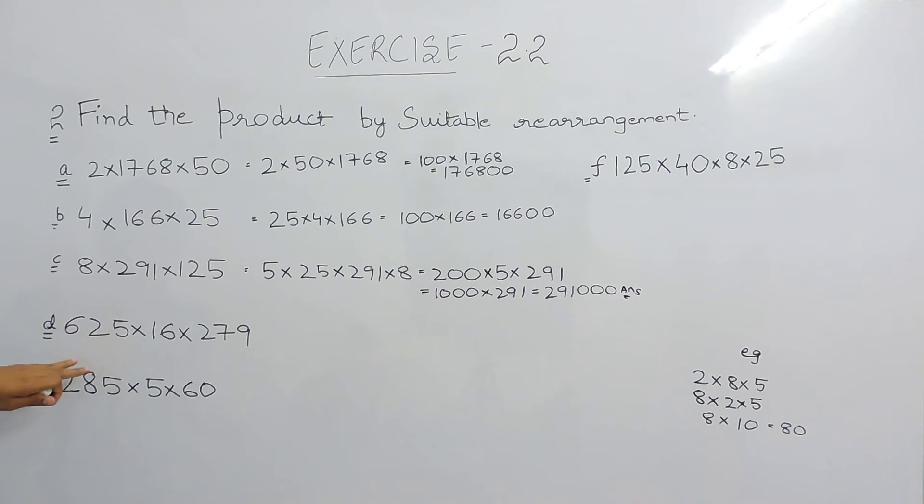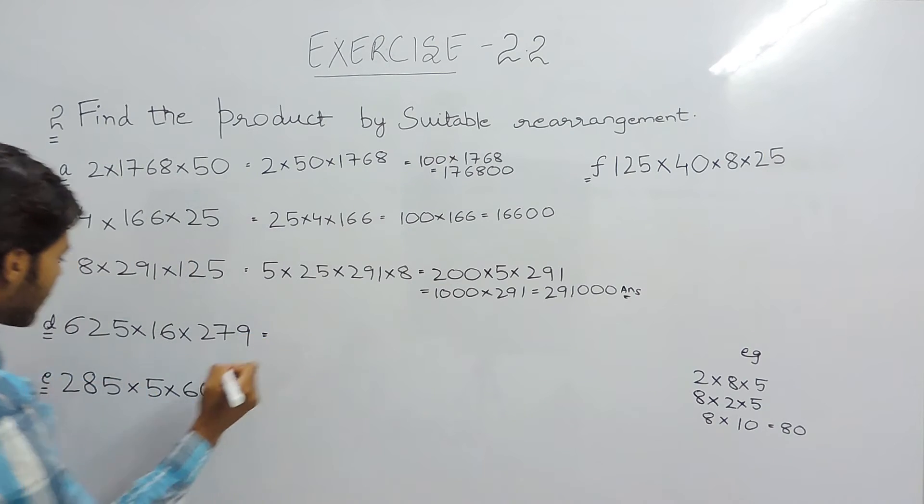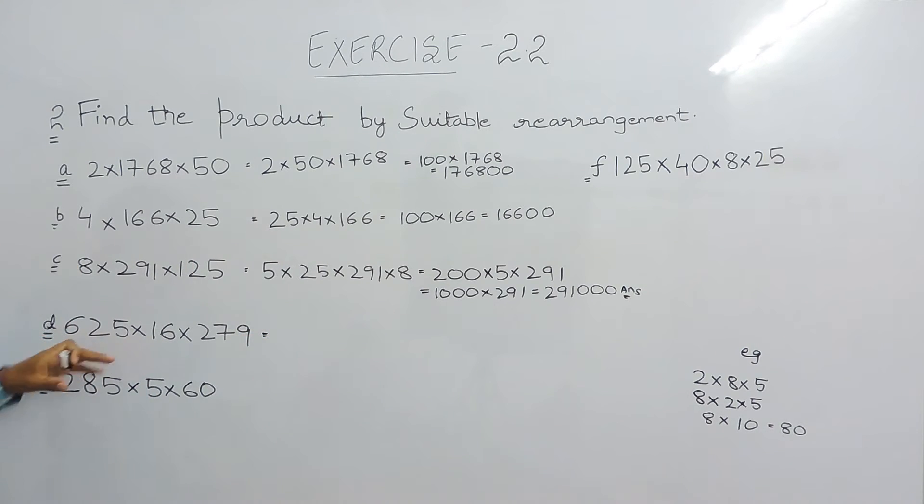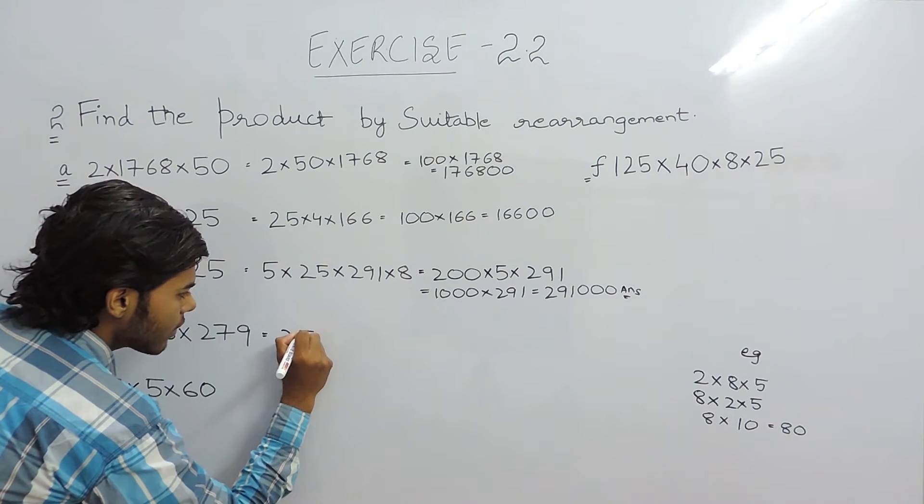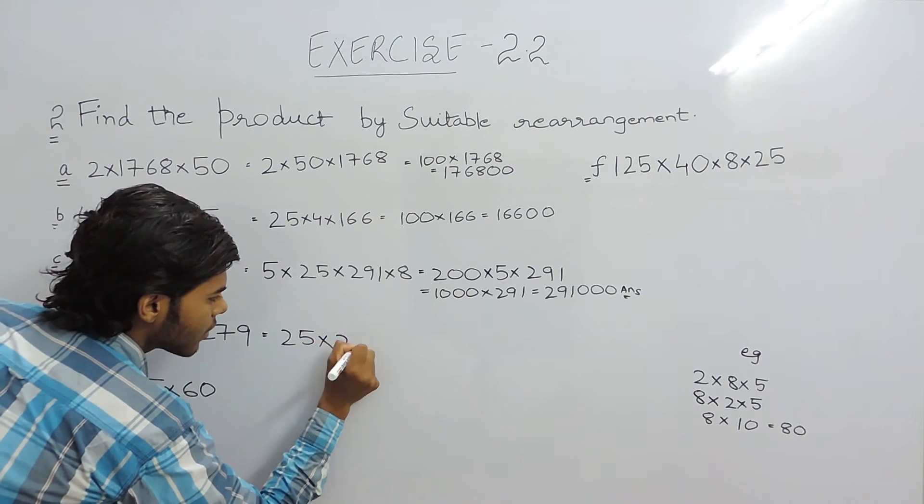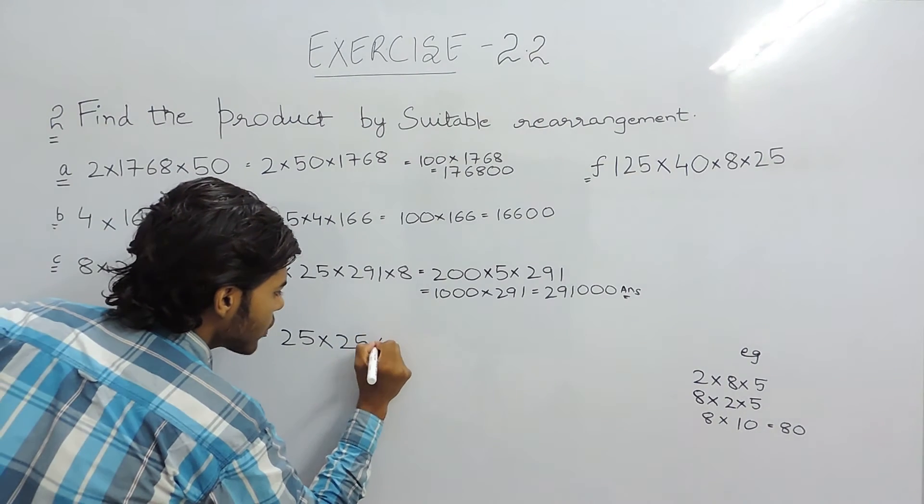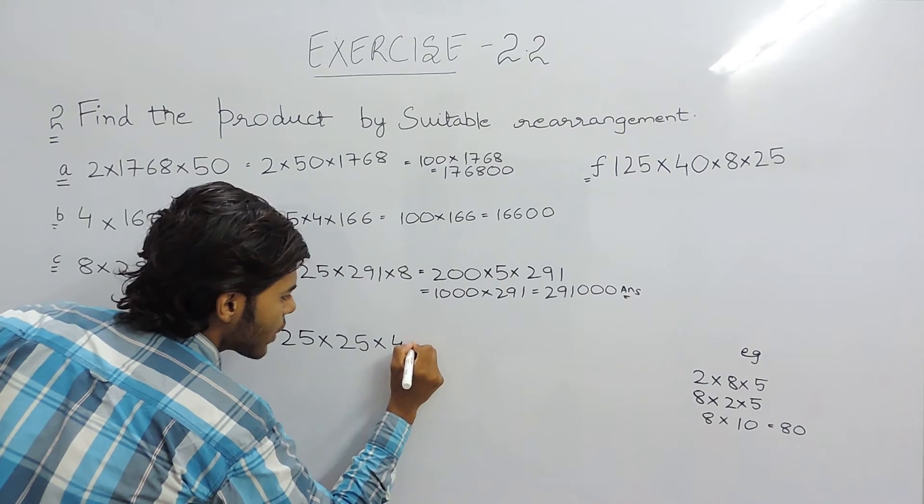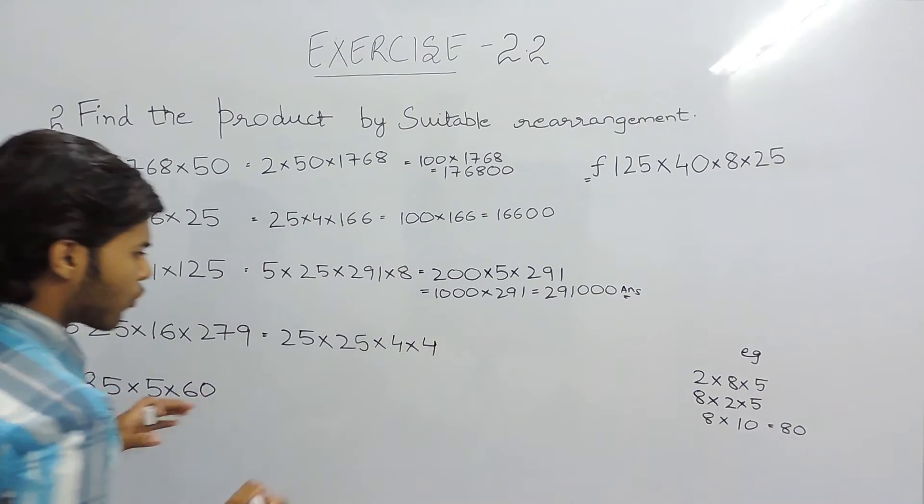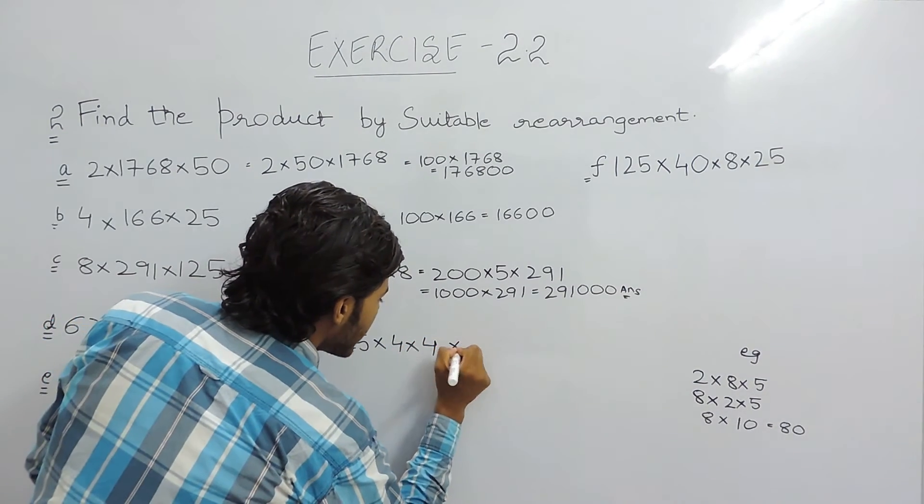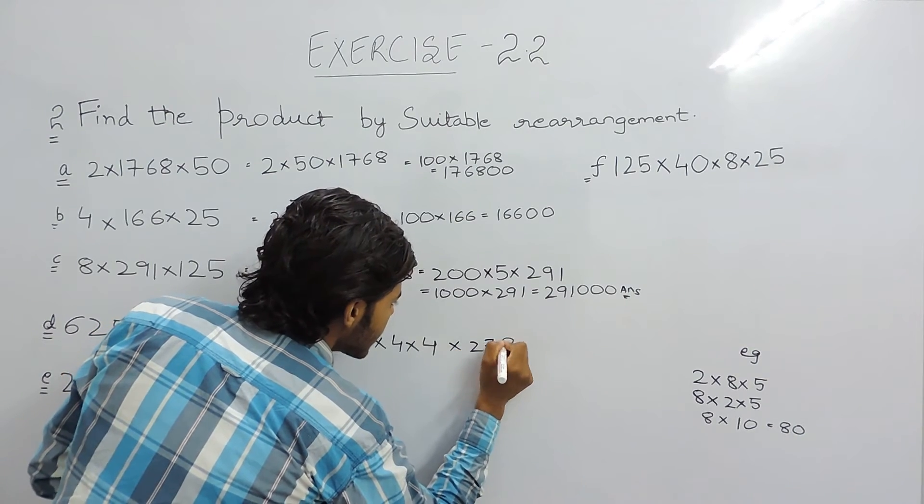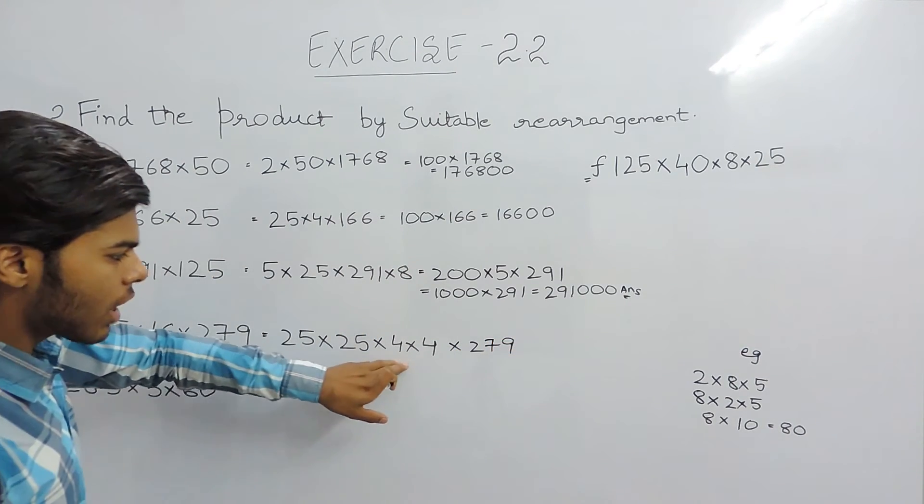In the fourth part it is 625 into 16 into 279. So you can break in the multiples of 5 again or if you know the table of 25. So this will be 25 into 25 because 625 is the square of 25. Then 16 is the square of 4, so 4 into 4 and then 279.